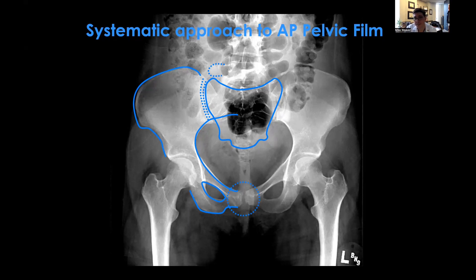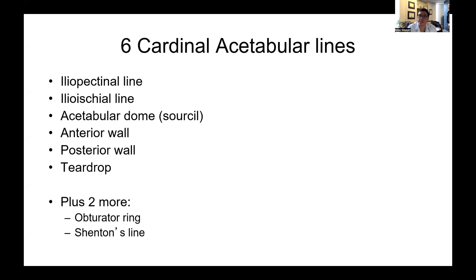The other common injury we see in the pelvis are acetabular fractures. For those, I look for the six cardinal acetabular lines: the iliopectineal line, the ilioischial line, the acetabular dome or sourcil, the anterior wall, the posterior wall, and the teardrop. In addition to those six lines described by Judet and Letournel, I also look at the obturator ring, which is useful in classifying fractures, and Shenton's line, which helps determine if there's a hip dislocation.